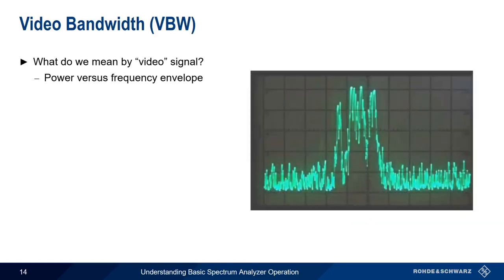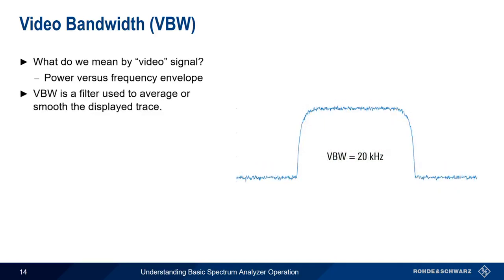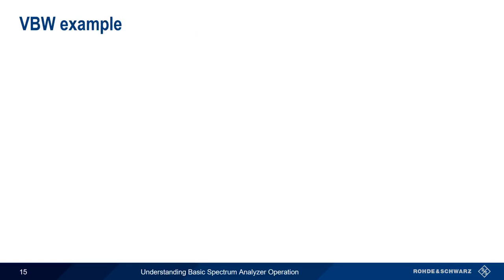Why video? In the old days, this signal was applied to the vertical deflection of a cathode ray tube in order to draw a video trace on the screen. In modern spectrum analyzers, video bandwidth is a type of filter used to average or smooth out the display trace. One very important thing to remember is that video bandwidth only affects how the signal is displayed, not the way that it's measured or acquired. This is unlike resolution bandwidth, so be sure not to confuse the two.